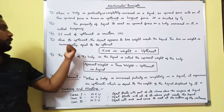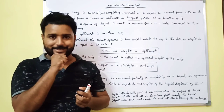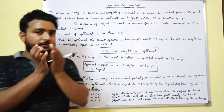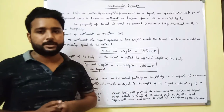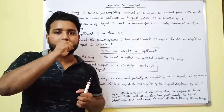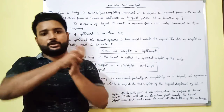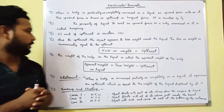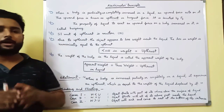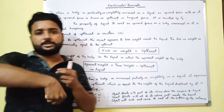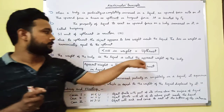This loss in weight is numerically equal to the thrust. The direction of thrust is opposite to the direction of weight, so there is a loss in the weight of the body. The weight of the body measured inside the liquid is called the apparent weight of the body.